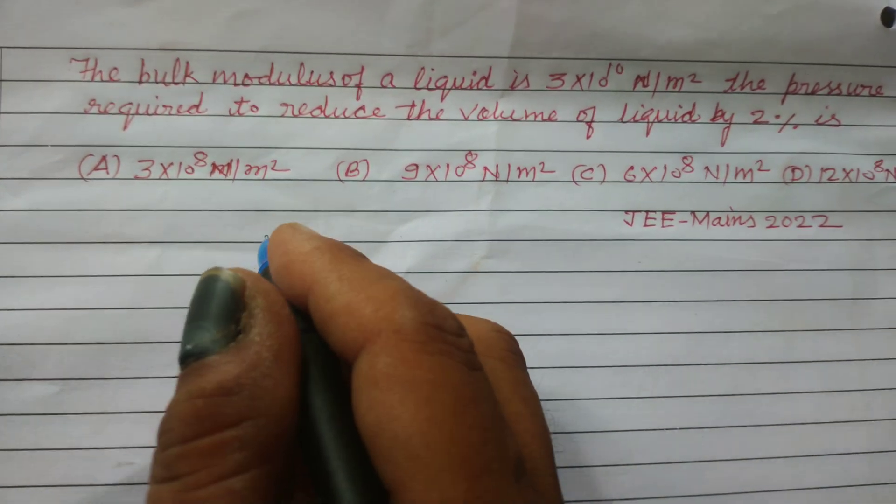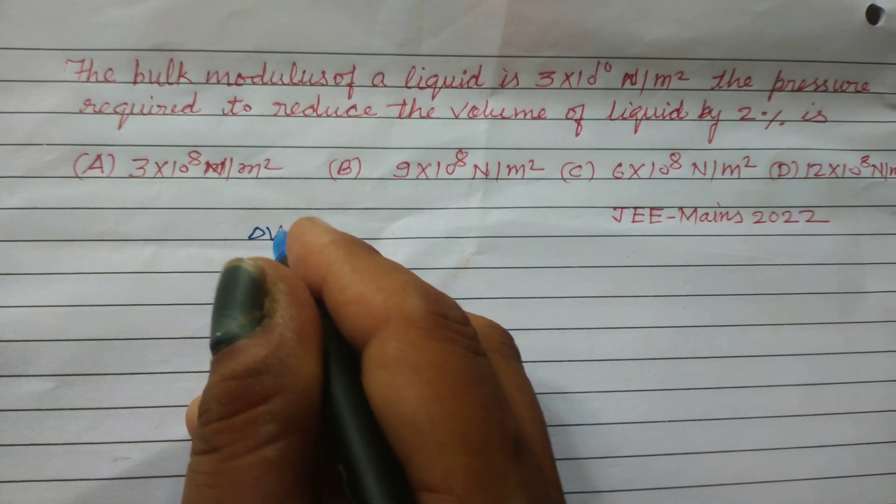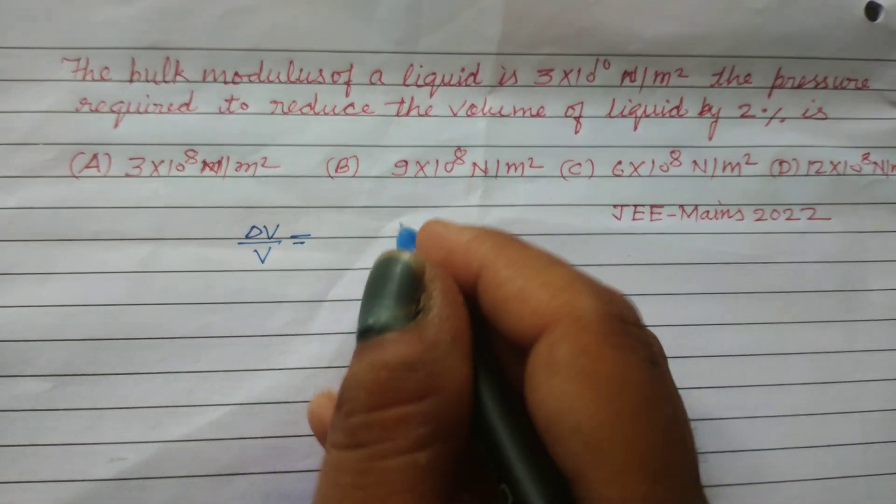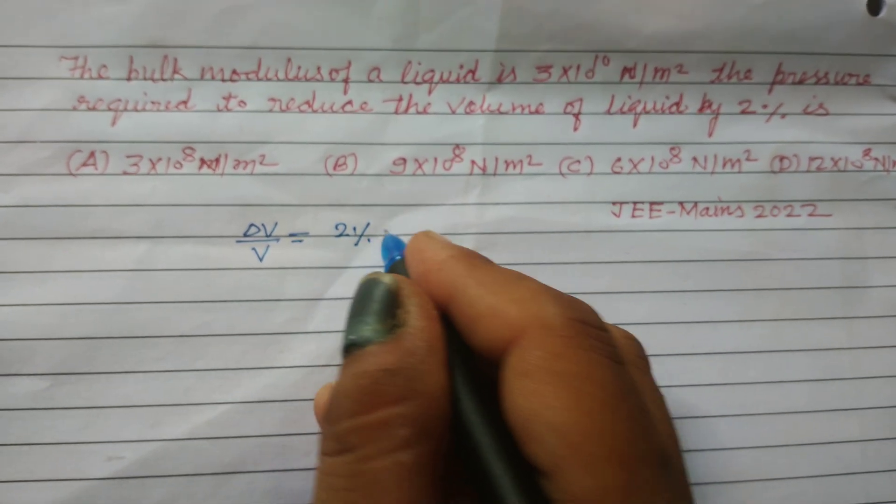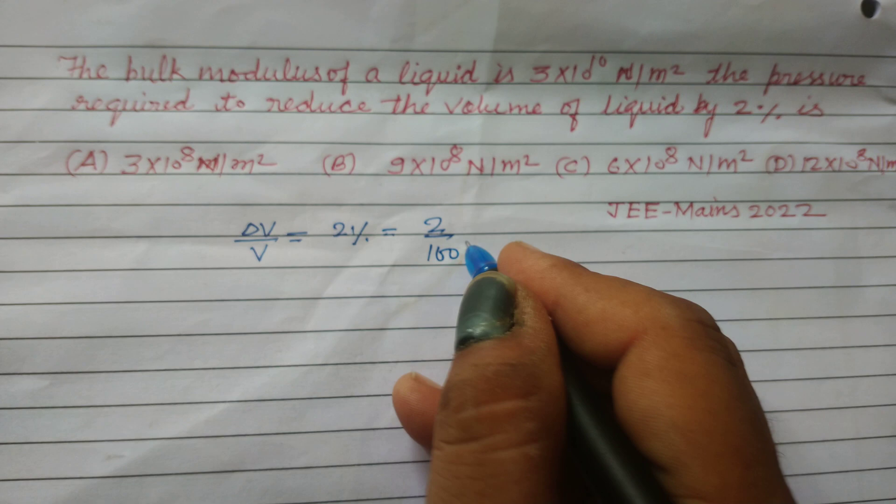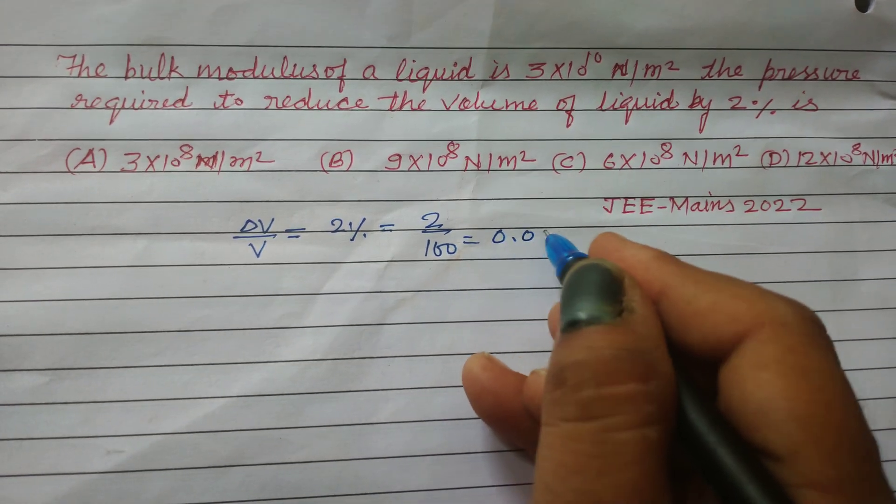So student, here ΔV/V is given, volume percentage decrease is 2%. So we write it as 2/100 = 0.02.